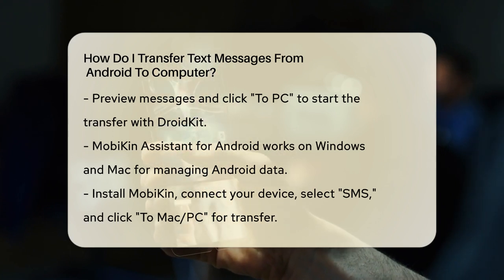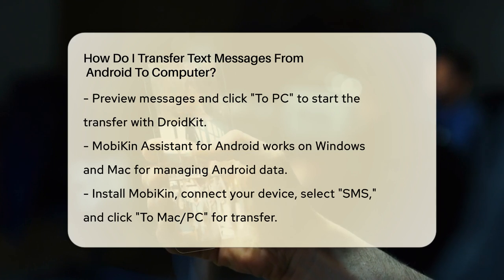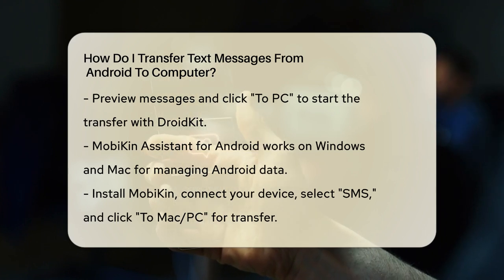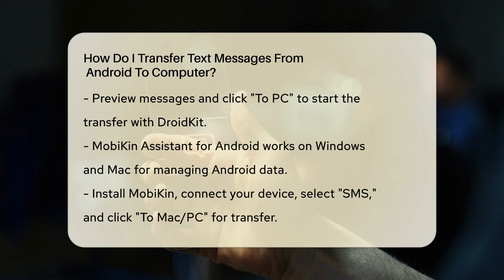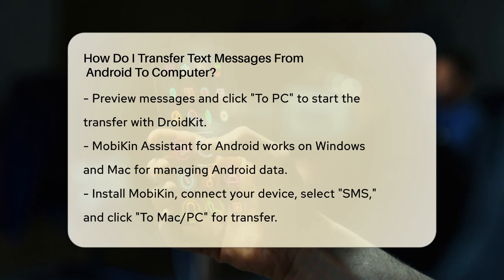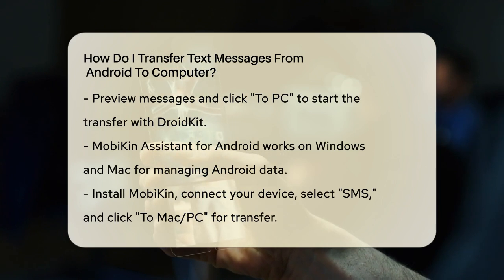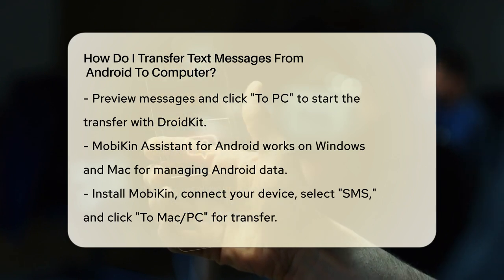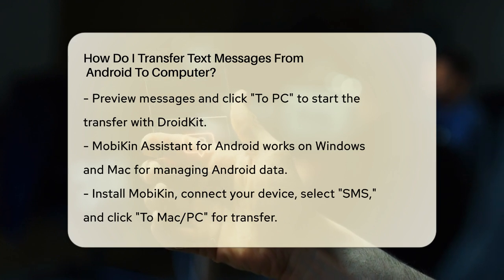Another method is using the Mobikin Assistant for Android. This tool works on both Windows and Mac and allows you to manage your Android data efficiently. You start by installing and running the program on your computer, then connect your Android device via USB. The software will recognize your phone and display its content. You can then select the SMS option, choose the messages you want to transfer, and click the To Mac PC button to start the transfer.